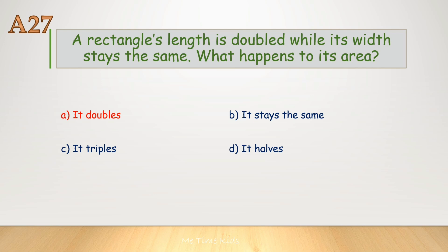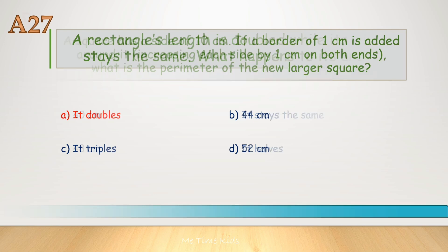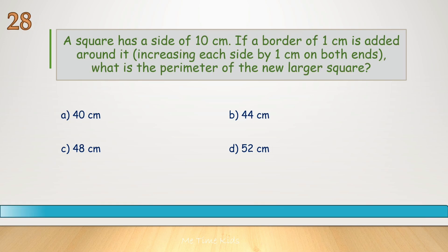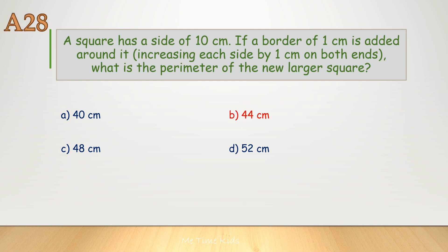A square has a side of 10 centimeters. If a border of 1 centimeter is added around it, increasing each side by 1 centimeter on both ends, what is the perimeter of the new larger square? Correct answer is B, 44 centimeters.